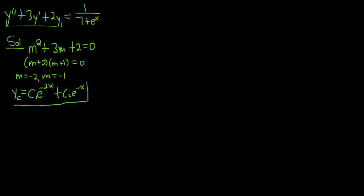We have distinct real roots. So y sub c, which is the solution we get when the equation is equal to 0, is equal to c1 e to the negative 2x plus c2 e to the negative x. This is called the complementary function, or the associated homogeneous solution. The final answer will be y equals yc plus yp — so we're halfway there, although there's still quite a bit left.